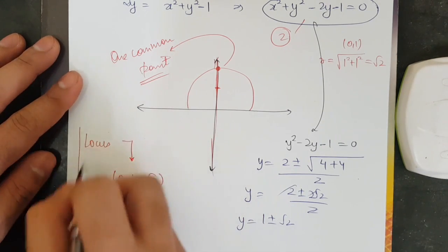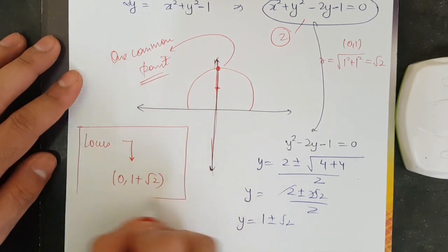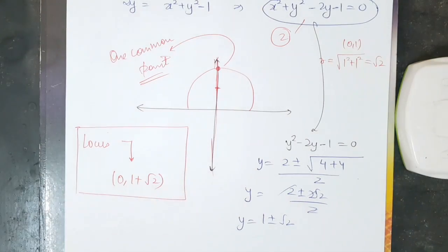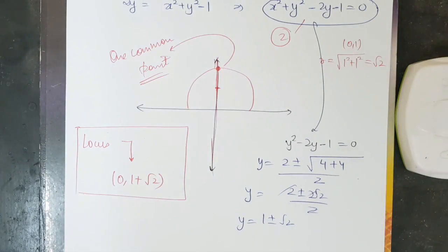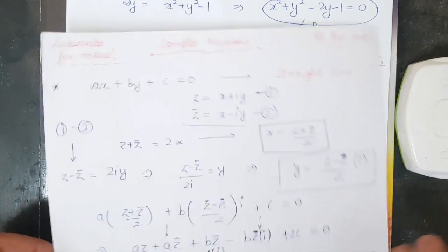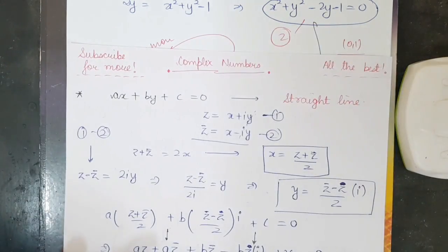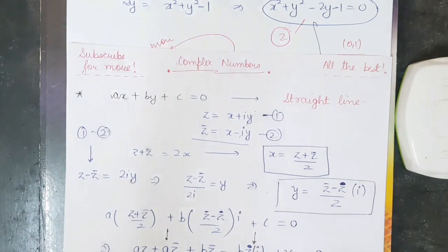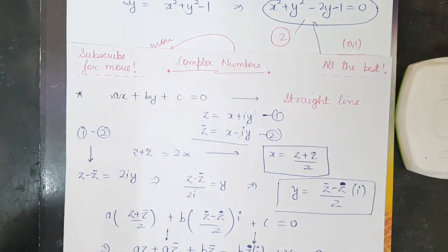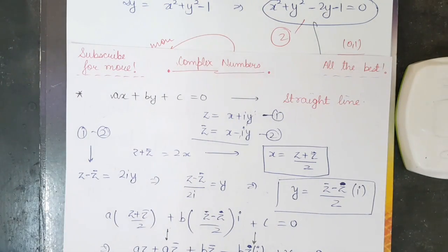So the final locus is the single point (0, 1 + √2). I hope this video has helped you. If you want to check out triangular inequalities, the link is in the description — those are also very helpful. Thank you and all the best.